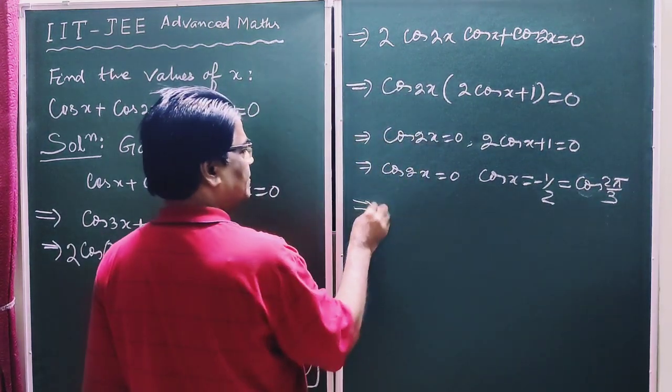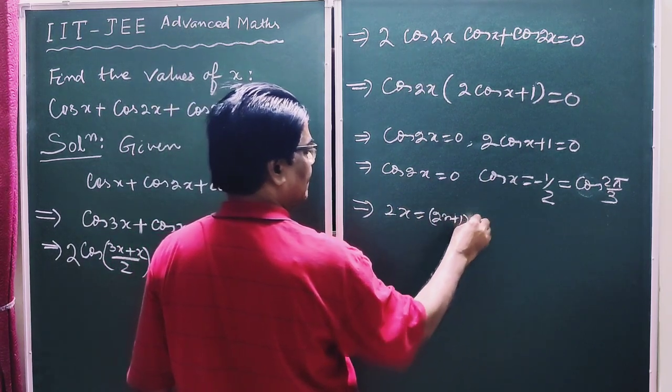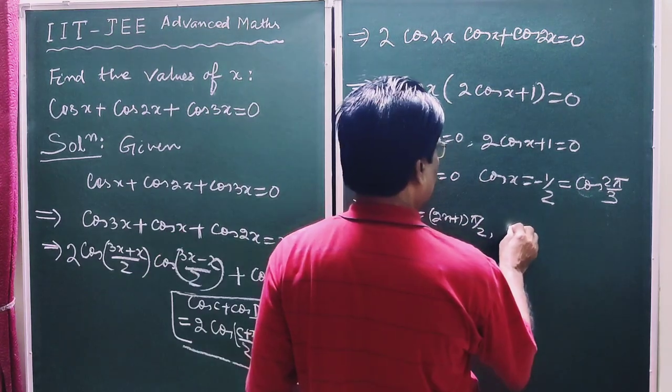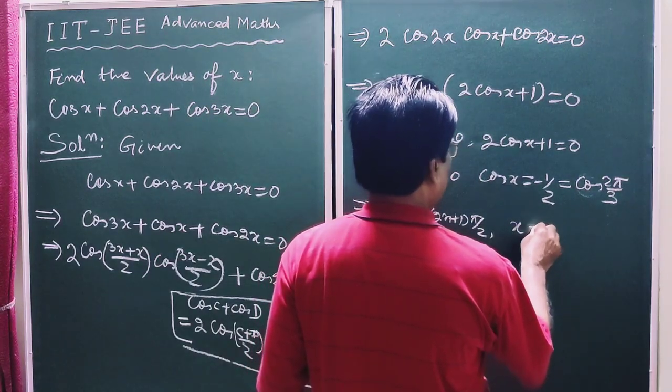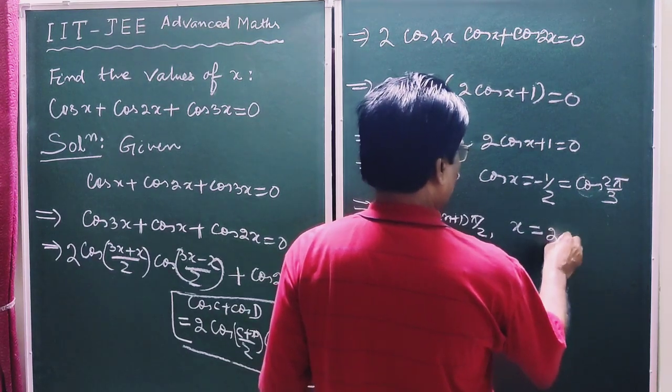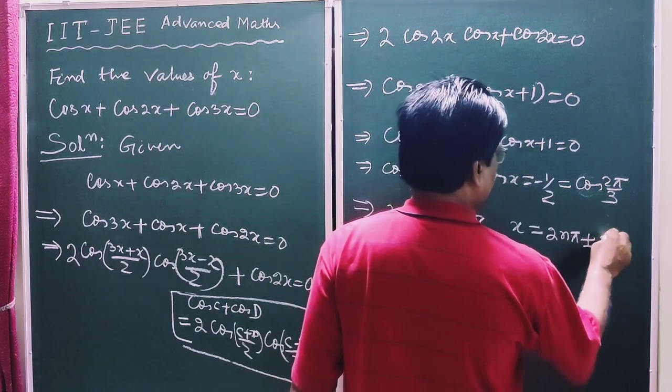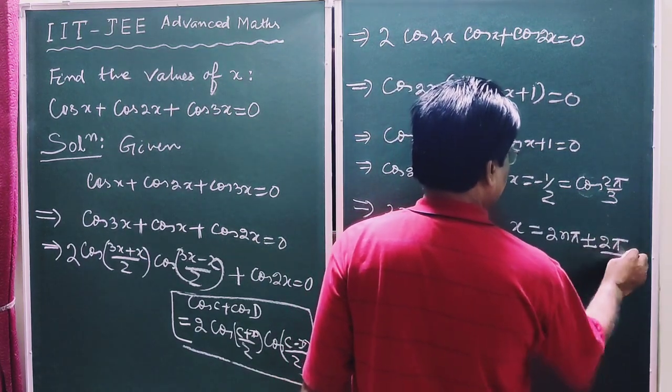So this implies 2x is an odd multiple of pi by 2, and here x equals, that is 2x equals 2n pi plus minus 2 pi by 3.